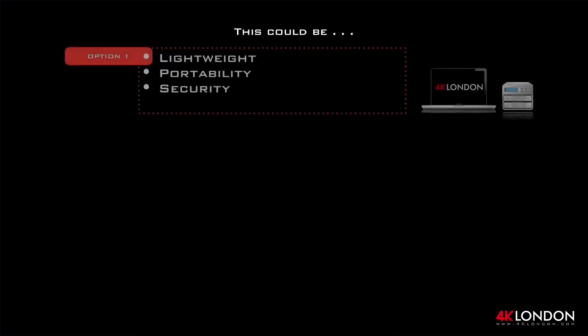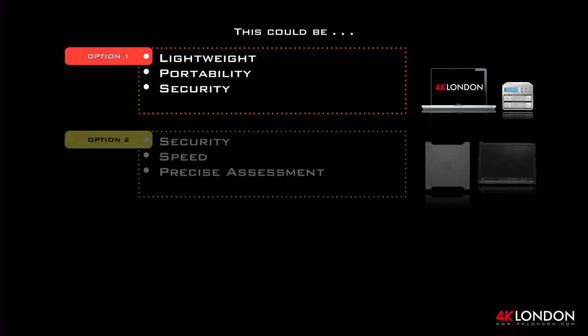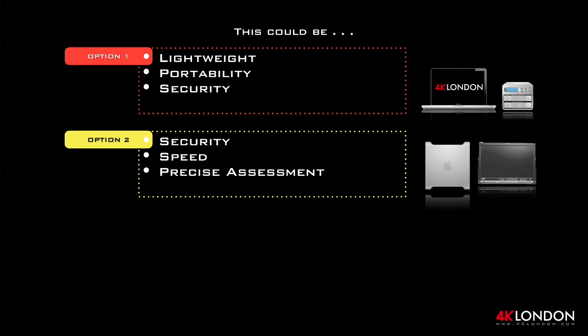There are a number of possible kit options that could be used to support your production, normally paired with the relevant skill set. Option 1 is the traditional data wrangler kit — lightweight equipment consisting of a laptop, an uninterruptible power supply (UPS), and bus-powered drives giving you multiple backups. This would be suitable for remote locations where power may not be available. Option 2 consists of a Mac Pro tower, a larger uninterruptible power supply, and a high-end Grade 1 monitor. Option 2 can deliver everything Option 1 can, but the footprint is much greater, so this setup would normally be used for studio-based projects.